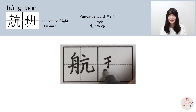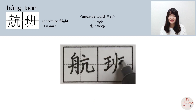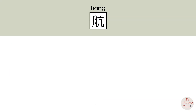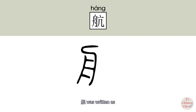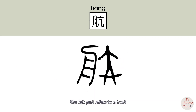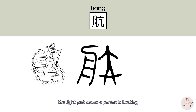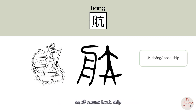航班. In ancient times, 航 was written with the left part referring to a boat, and the right part showing a person is boating. So 航 means boat, ship.